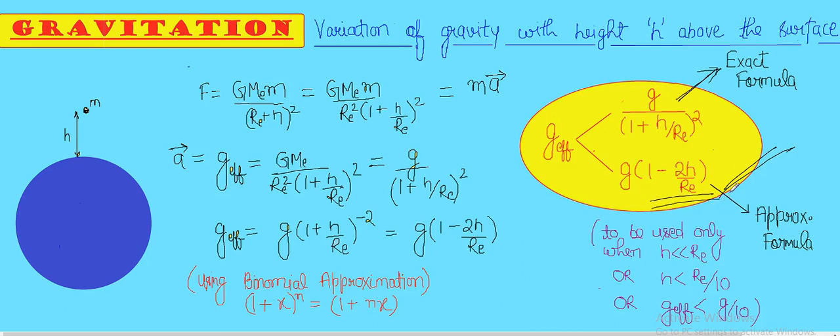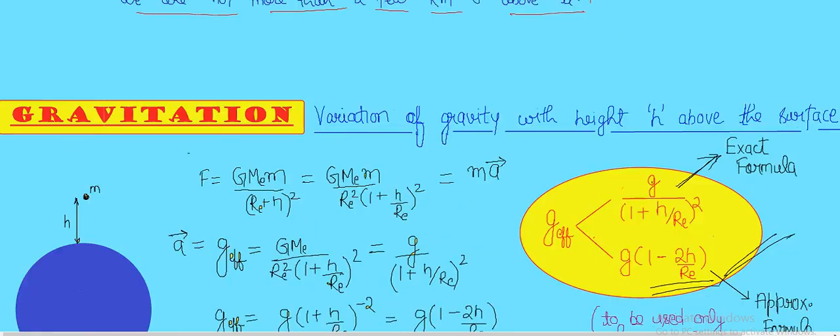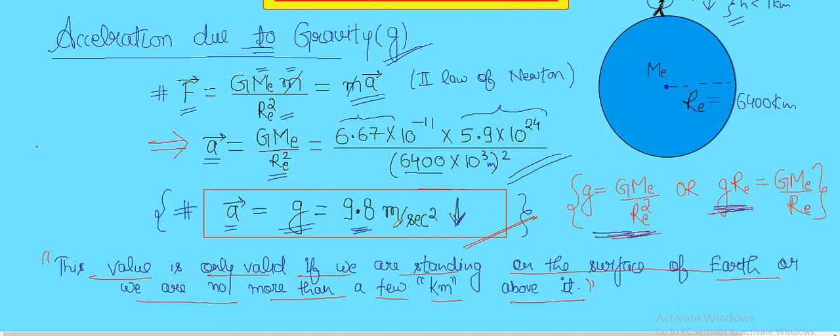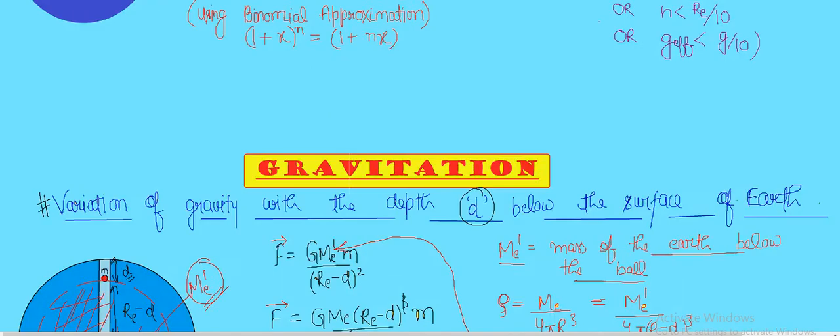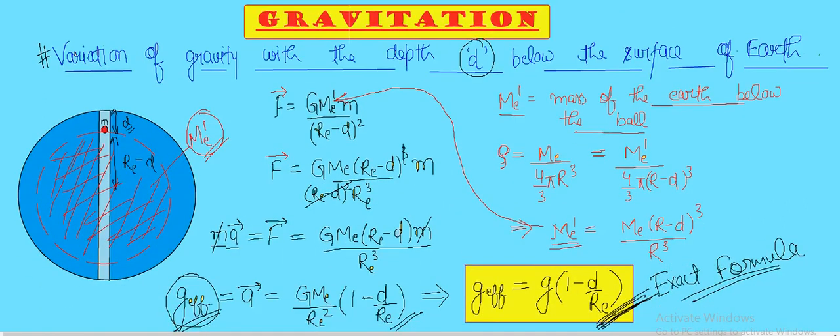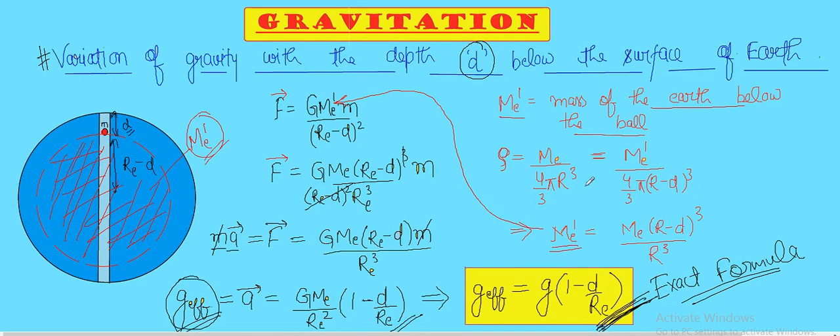And remember, this is small g. We have already known its value for a very long time: small g equals 9.8 meters per second squared in the downward direction. So thank you guys for watching the video. Keep watching to learn how to apply these three formulas in different situations.